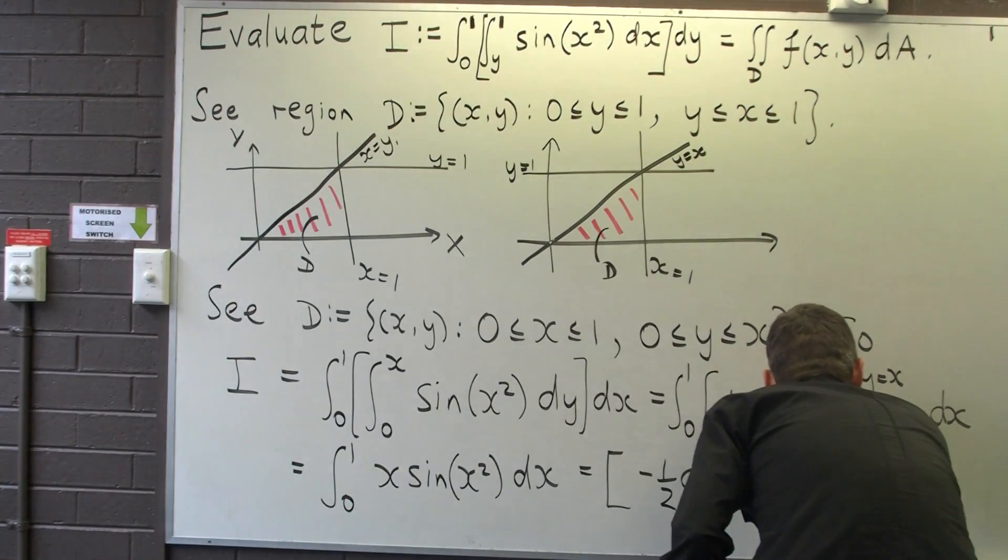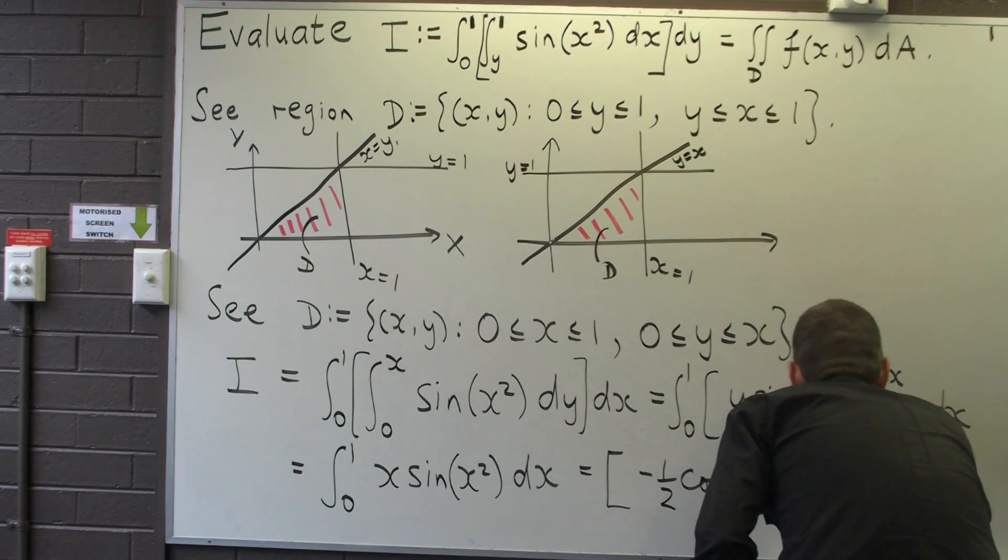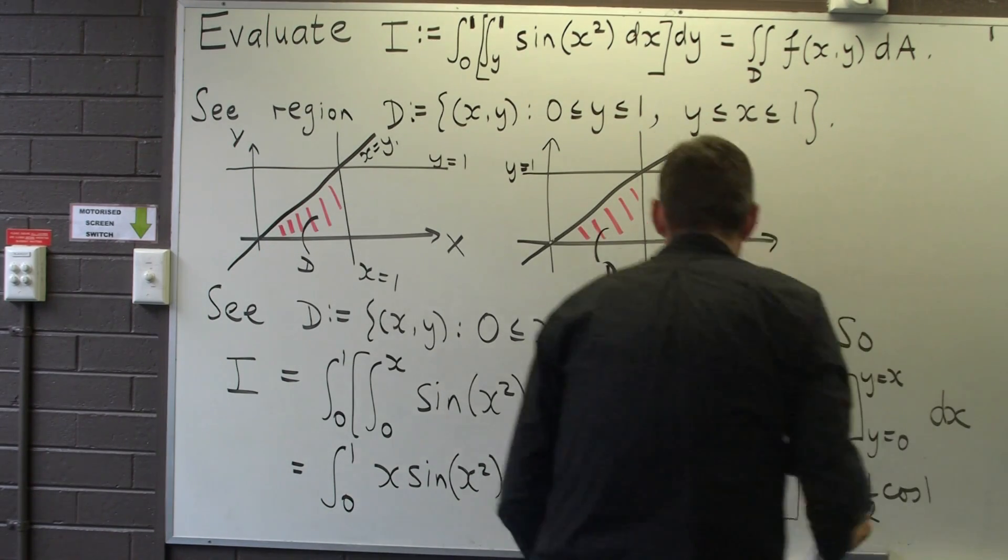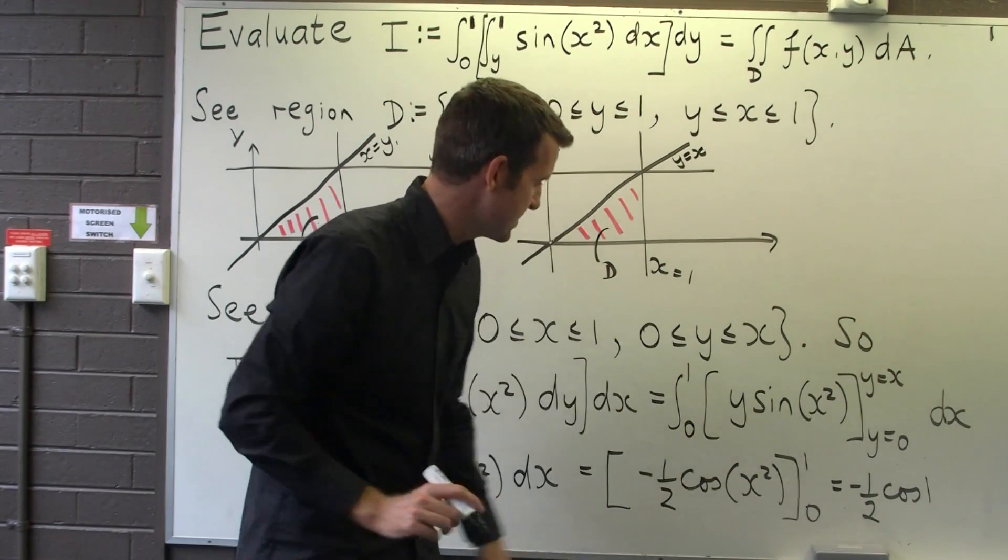You would let u equal x squared. Minus one half cos 1 minus one half cos 0. So that would be plus 1.